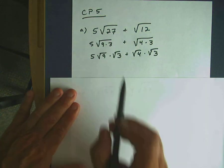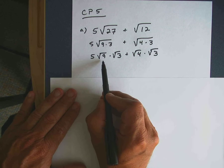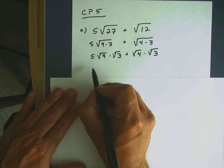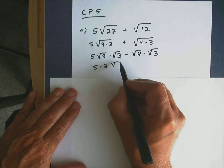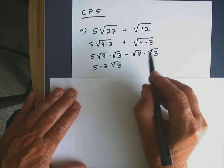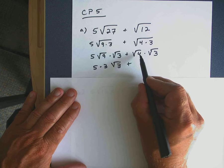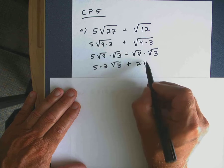Okay, now I can actually take the square root of 9. The square root of 9 is 3. So I have 5 times 3 times the square root of 3. And then plus the square root of 4. I can take the square root of that. That's 2 times the square root of 3.